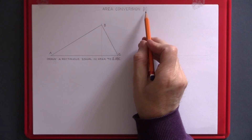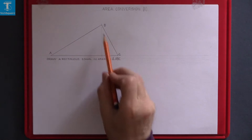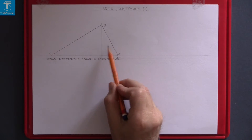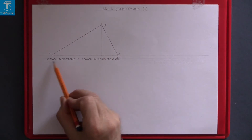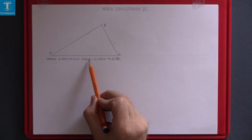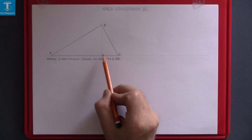Area Conversion 2. Given this triangle ABC, draw a rectangle equal in area to the triangle.